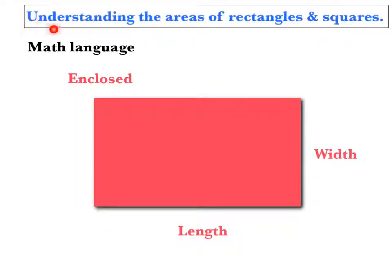Okay, so today we're going to be talking about how to understand the areas of rectangles and squares. The purpose of this is to understand that squares have the largest areas compared to rectangles if they have the same perimeter.